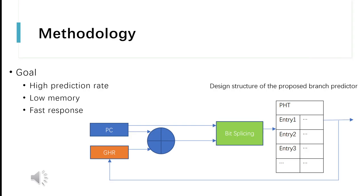The following picture shows the design structure of my proposed branch predictor. This model is based on G-select and G-share branch predictors, but uses a bit splicing and XOR scheme. As mentioned in my proposal, the conventional branch predictor that combines local and global predictors is still an up-to-date prediction scheme. However, the index aliasing problem is one of the root problems affecting the performance of the global predictor, so this model is proposed to alleviate the aliasing problem.